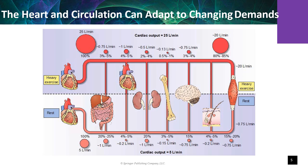All blood vessels, except for capillaries, have a three-layer wall structure. Blood flow distribution to organs and tissues at rest is shown at the bottom of the image, and redistribution during exercise is shown at the top, depicting the percentage of the total cardiac output perfusing to each organ.